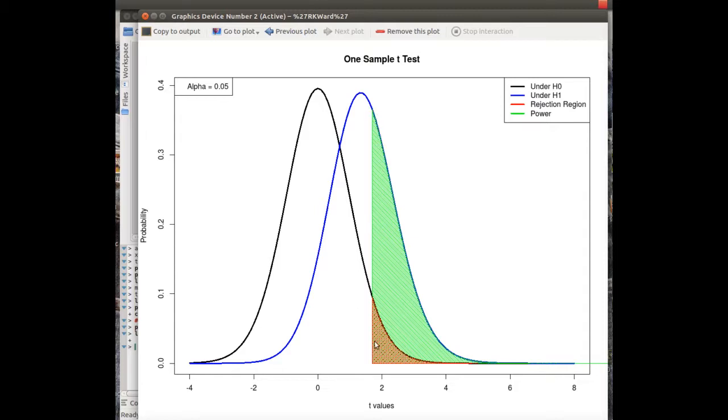Now this is not a lot of area, so we usually want 80%. You want 80% of this curve shifted to the right, so the probability is at least 80% that you reject, given that the alternative is true. But let's calculate what power we have here.